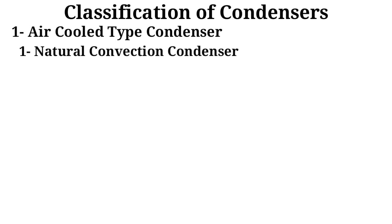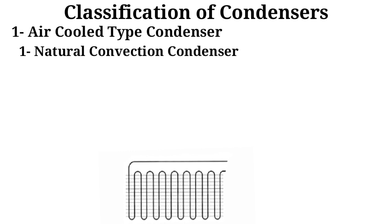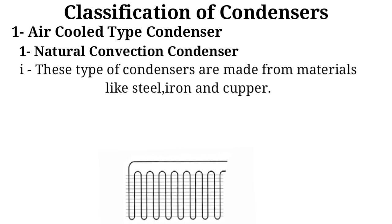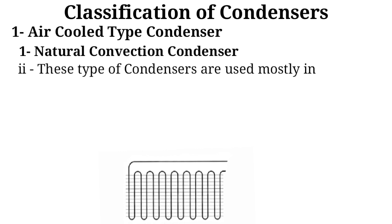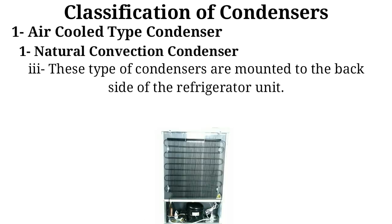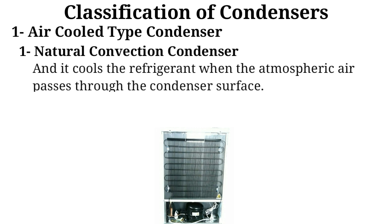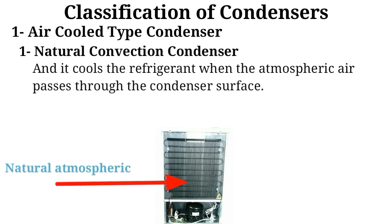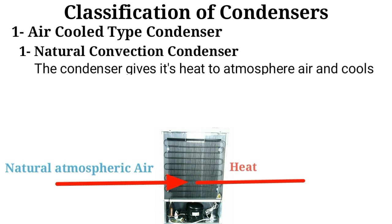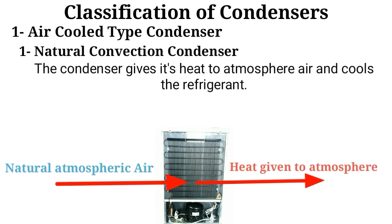Key points about the natural convection condenser: these types of condensers are made from materials like steel, iron, and copper. They are used mostly in domestic type refrigerators. These condensers are mounted to the backside of the refrigerator unit, and cool the refrigerant when atmospheric natural air passes through the condenser surface. The condenser gives its heat to the atmosphere and cools the refrigerant.